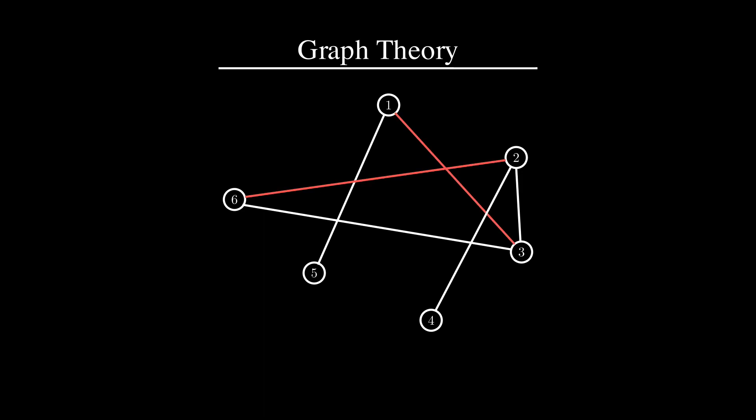Matchings are sets of edges that don't share endpoints. In other words, each edge matches a distinct pair of vertices. A matching is said to be perfect when all vertices in the graph are matched in this way.